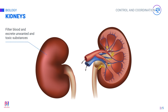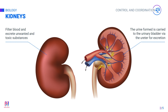The urine moves out of the kidney and travels through the ureters all the way to reach a temporary storehouse — the urinary bladder. It is then excreted out of the body when you urinate. Urine has three main constituents: urea, ions, and water.